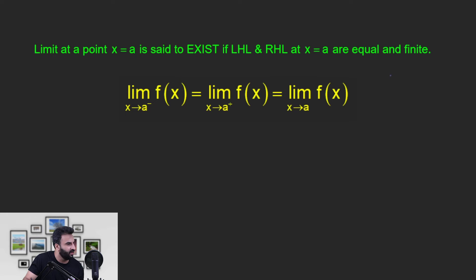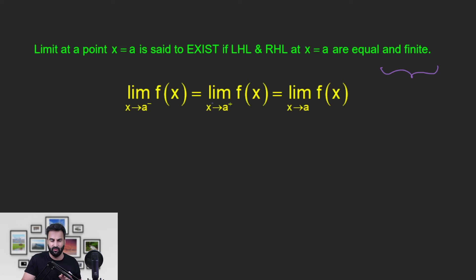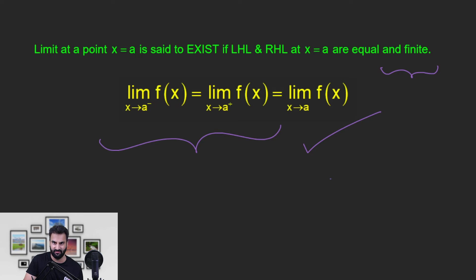वैसे भी जब equal बोल दिया है तो finite बोलने की कोई जरूरत नहीं है। हम infinite quantities को equal नहीं बोलते — अंबानी जी के पास infinite पैसा, अदानी जी के पास infinite पैसा, बट क्या वो equal हैं? नहीं। So infinite quantities को अपन equal नहीं बोलते। Equal word आ गया मतलब they are finite। तो अगर किसी point x = a पर left-hand limit और right-hand limit equal हैं, then we say limit at that point exists।